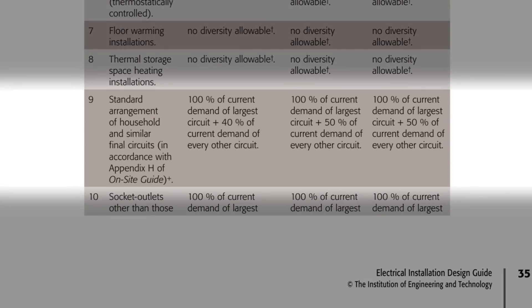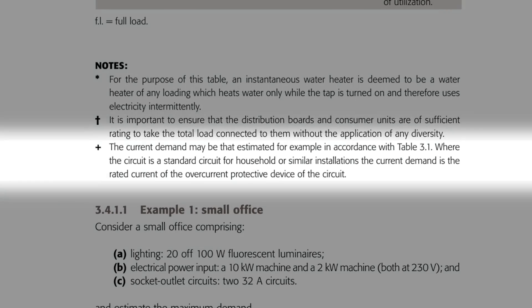We still have to accommodate those socket circuits. They fall under row nine - standard arrangement of household and similar final circuits in accordance with Appendix H of the On-Site Guide. We're told to use 100% of the current demand of the largest circuit and 40% of the current demand of every other circuit. But what is the current demand of a 32-amp ring final circuit? The footnote reads: for standard circuits for household or similar installations, the current demand is the rated current of the overcurrent protective device of the circuit.